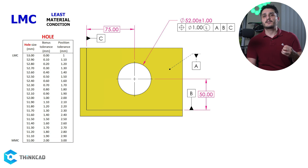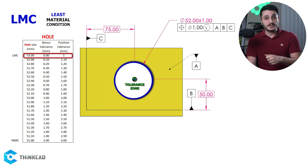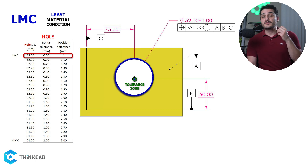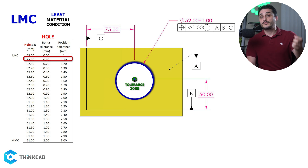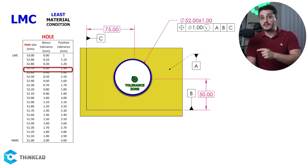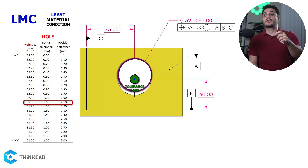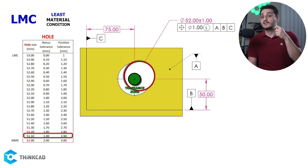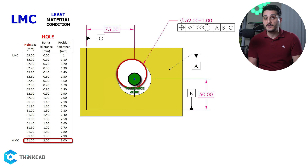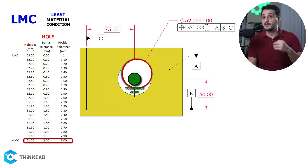When our hole is at LMC, which is the largest it can be, we have the smallest position tolerance of 1 mm. As we move towards MMC, making the hole smaller, we gain bonus tolerance the same amount. When we reach MMC of 51 mm, we have our largest position tolerance of 3 mm.